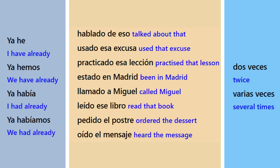Now let's swap over and you do the Spanish. How would you say 'we've already used that excuse twice'? YA HEMOS USADO ESA EXCUSA DOS VECES. And 'we've already talked about that'? YA HEMOS HABLADO DE ESO.